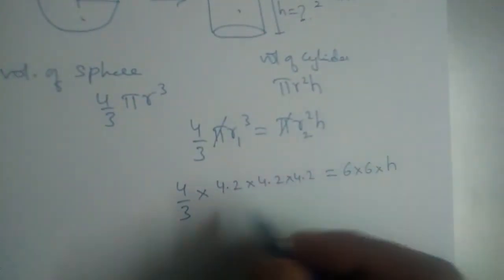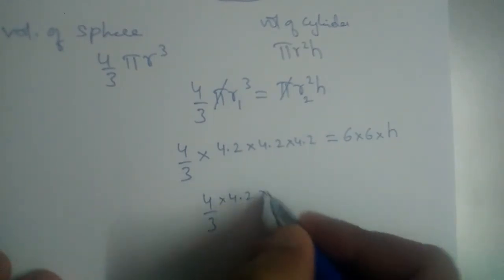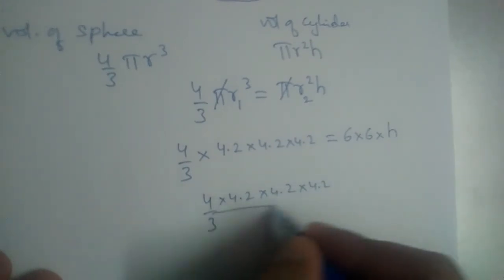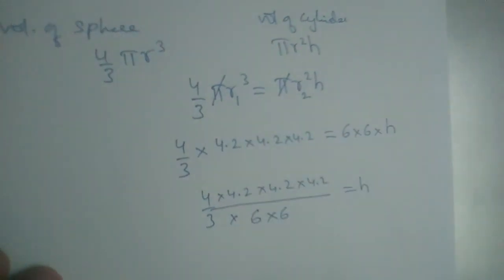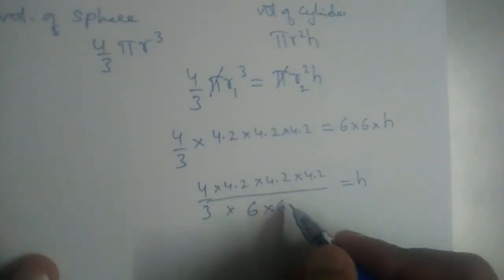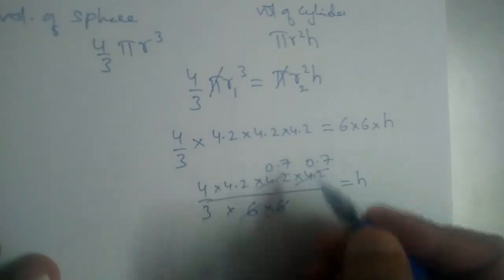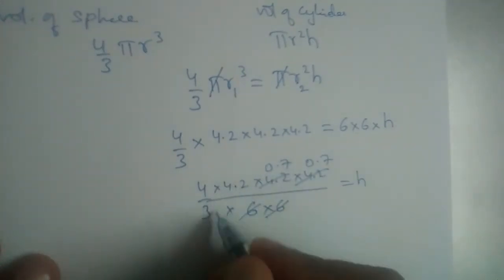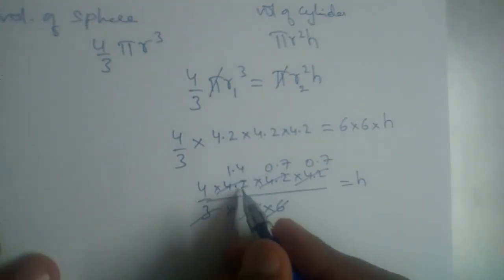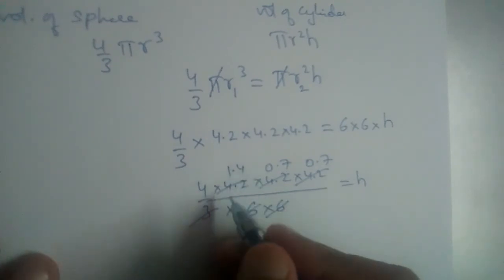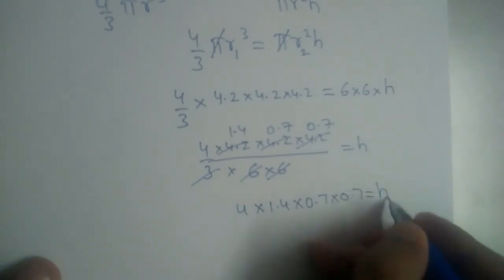Sending the 6×6 to the other side, h = (4/3 × 4.2 × 4.2 × 4.2) / (6 × 6). Now cancelling carefully: 6 goes into 4.2 giving 0.7, so both 4.2's become 0.7. And 3 goes into 4.2 giving 1.4. So h = 4 × 1.4 × 0.7 × 0.7.